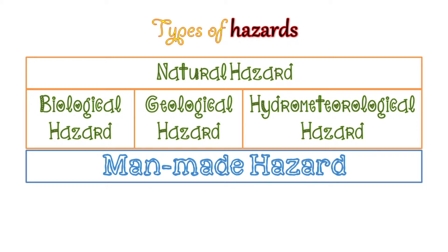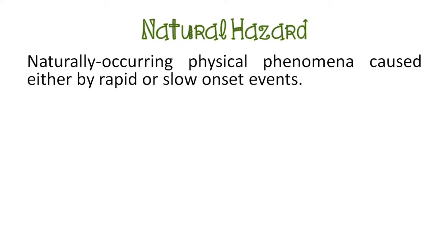We have two types of hazards: natural hazard and man-made hazard. Under natural hazard we have biological hazard, geological hazard, and hydro-meteorological hazard. First, let us discuss natural hazards. A natural hazard is a naturally occurring physical phenomenon caused either by rapid or slow onset events.